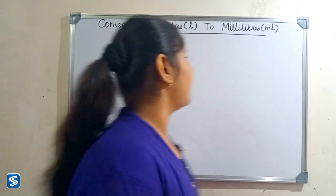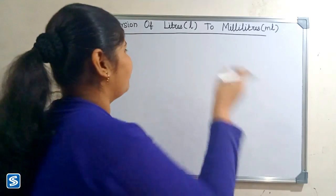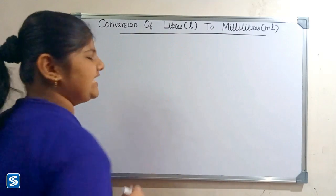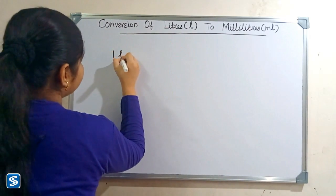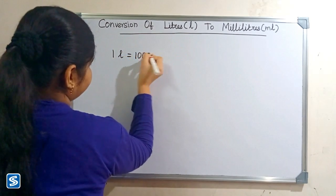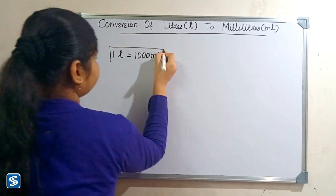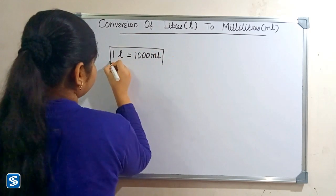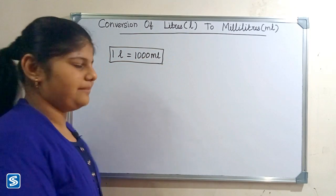Hi friends, welcome to So Much channel. In this video I'm going to teach how to convert liters into milliliters. The formula for converting liters into milliliters is: one liter is equal to one thousand milliliters. Now we will take some examples.